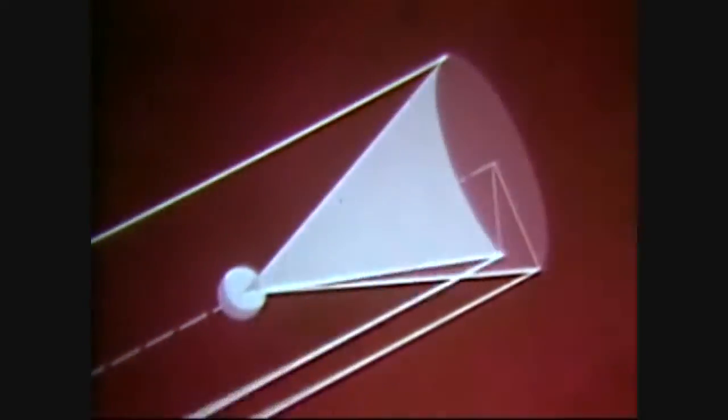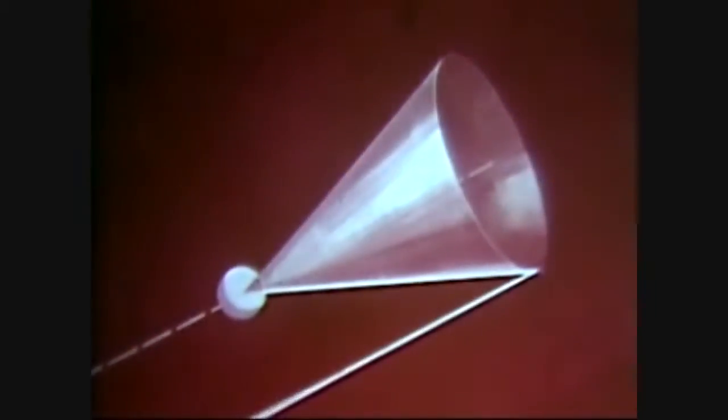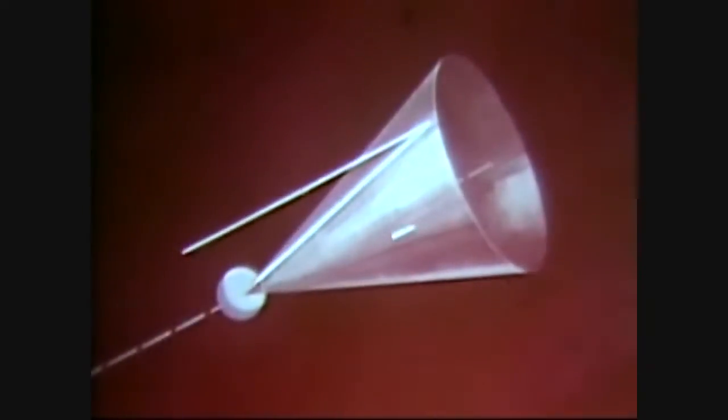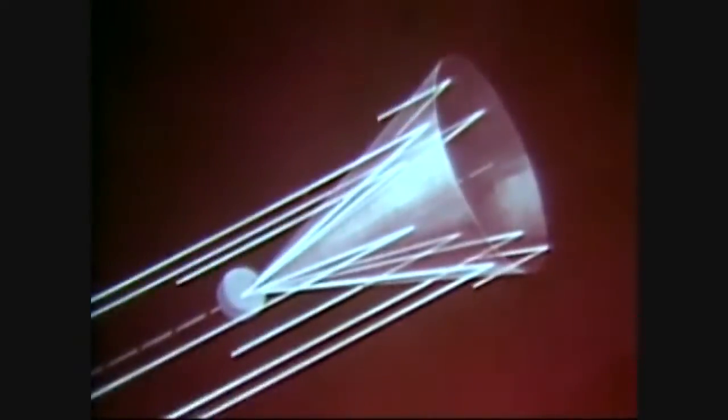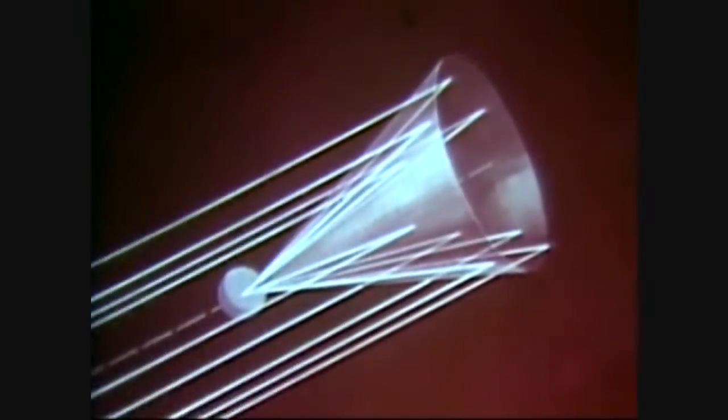This angle defines a cone of position, because the angle between the planet and the star could have been sighted from any point on the surface of that cone. But one sighting will not tell him where.